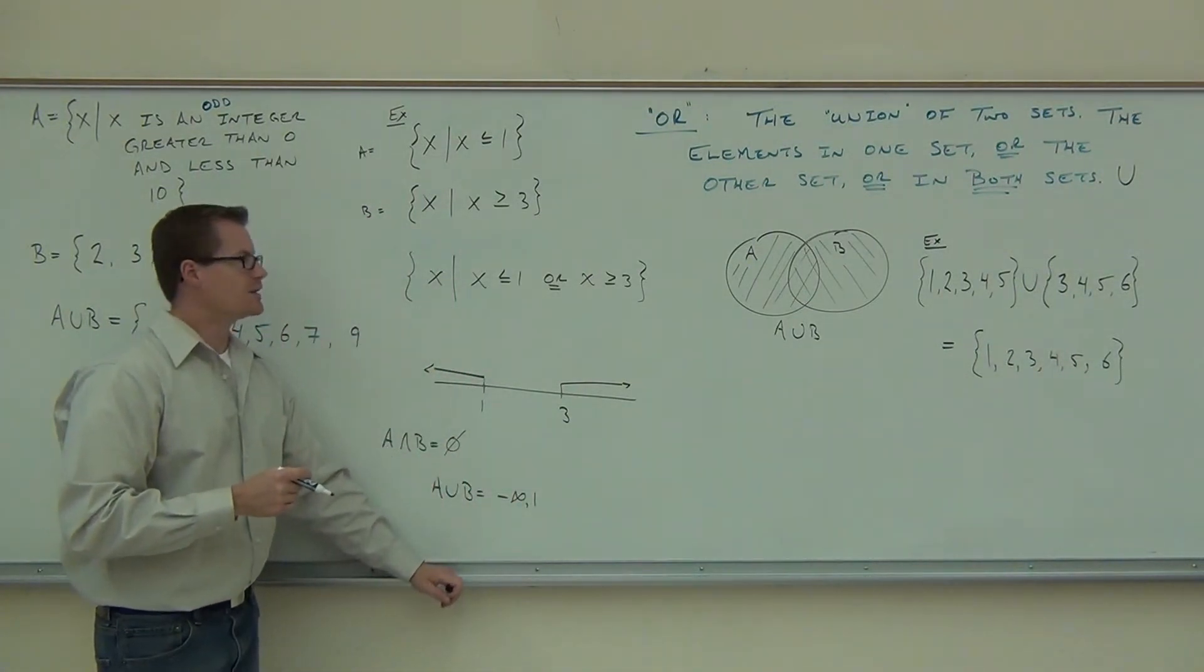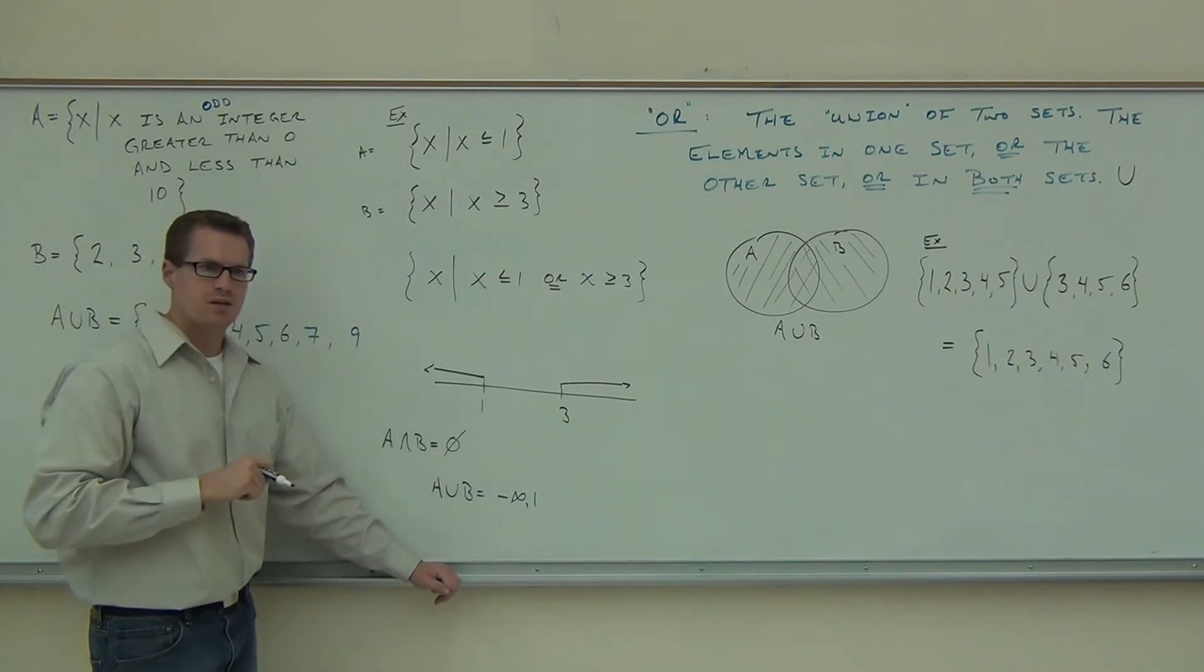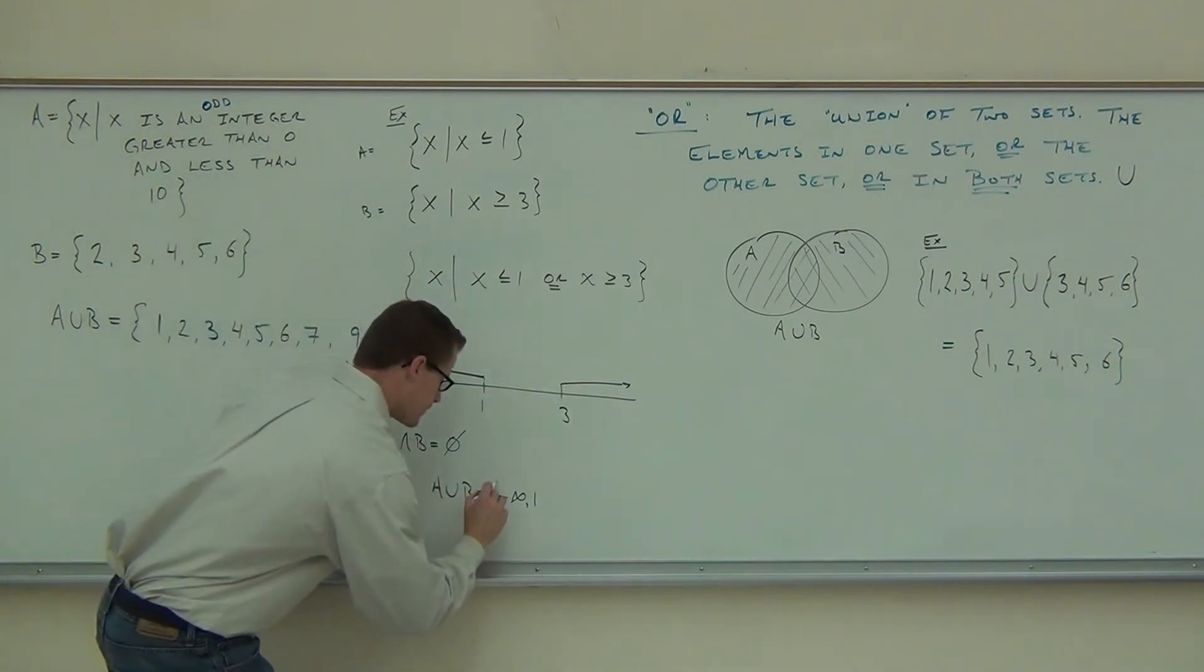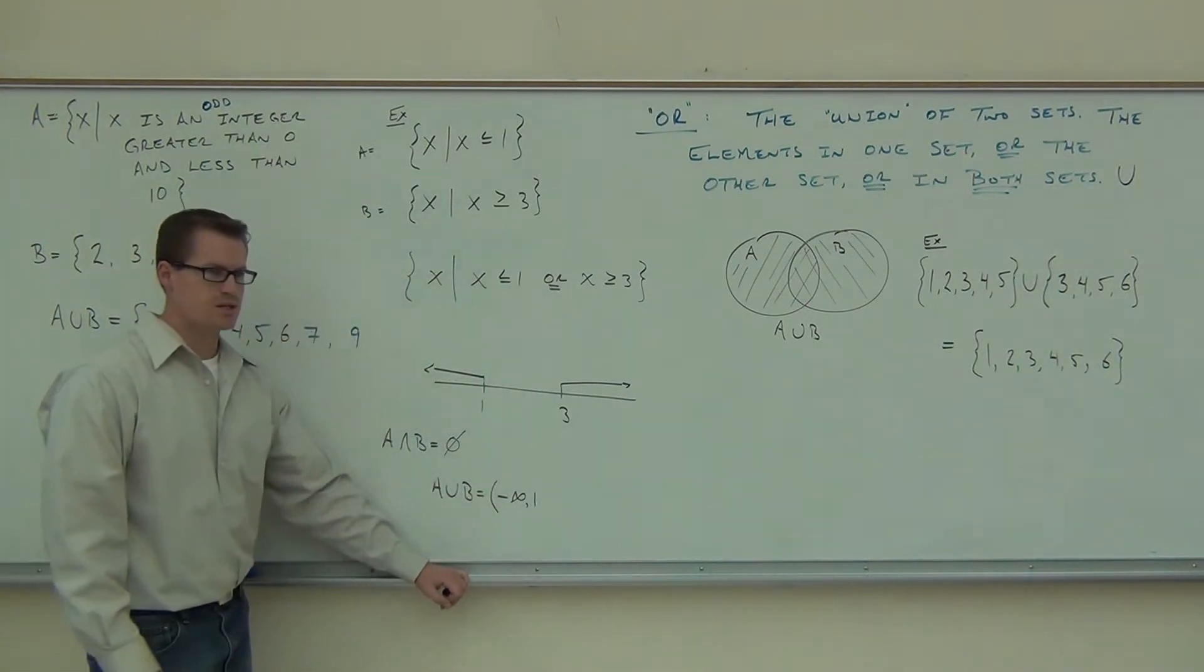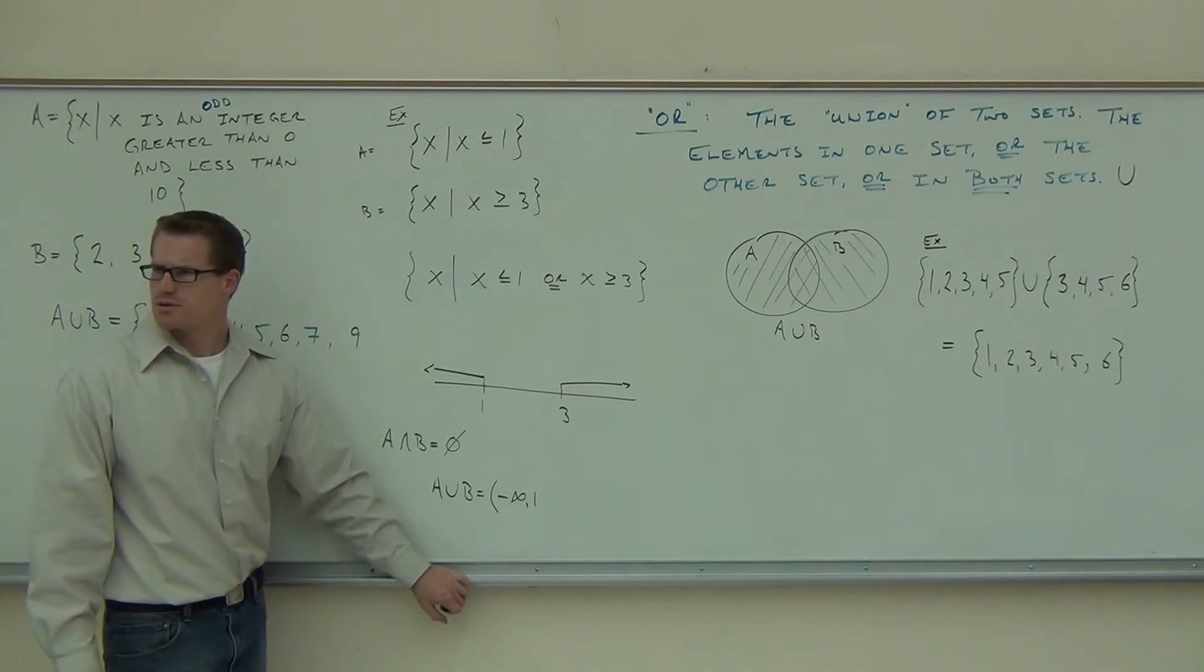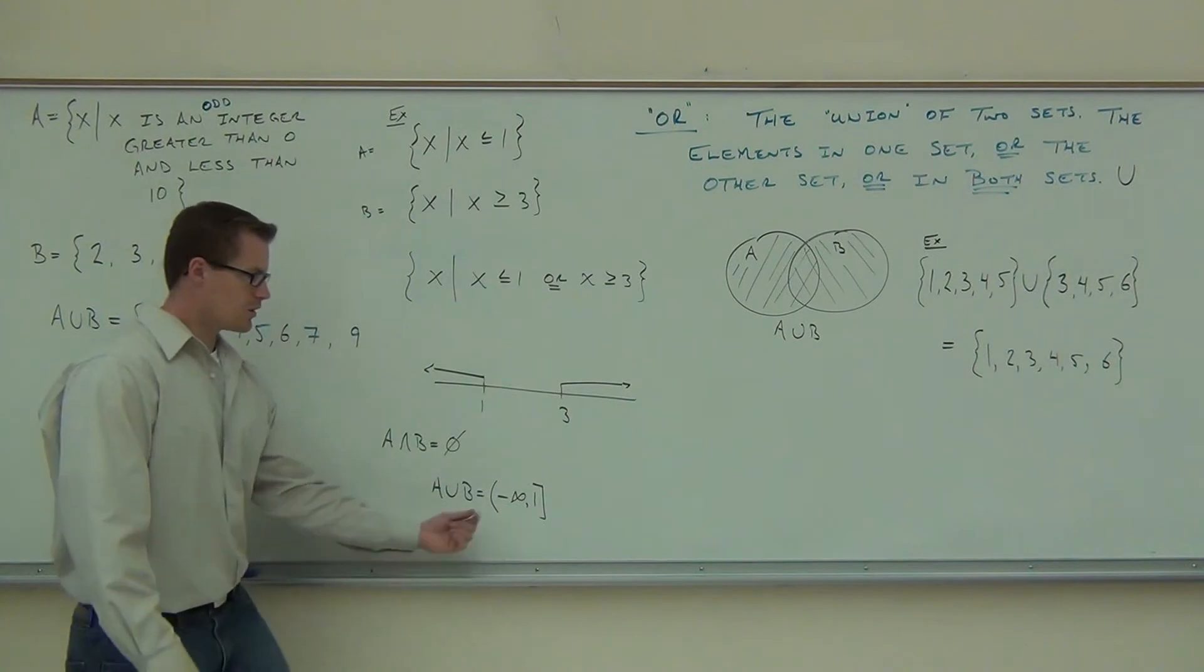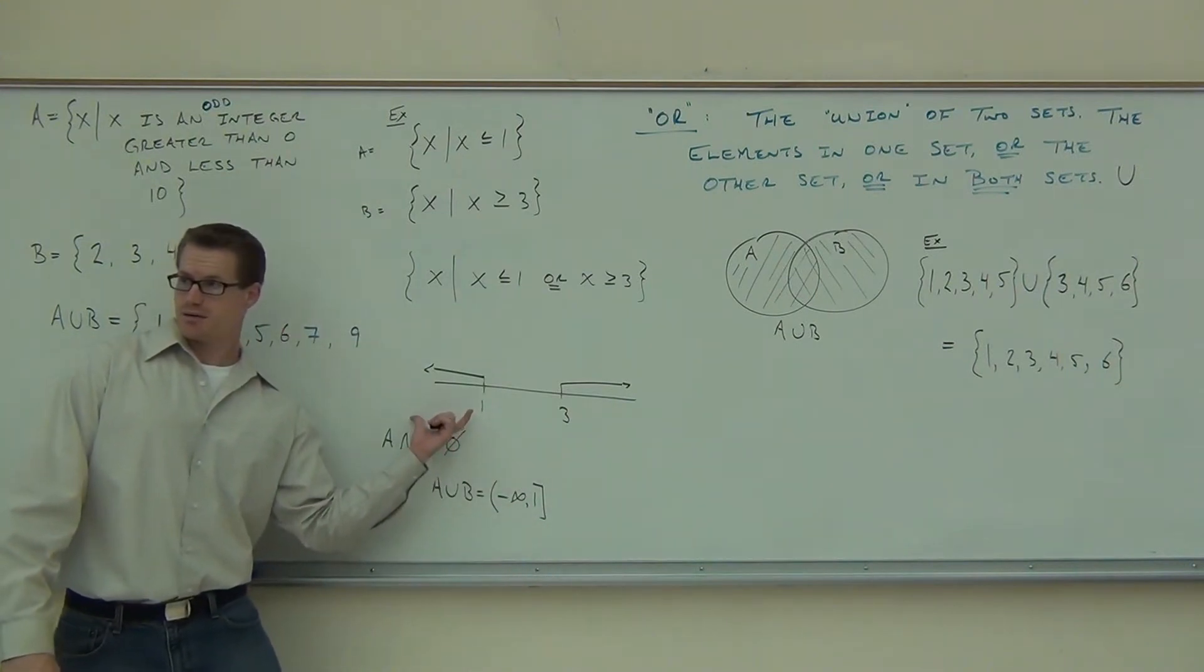First interval. Let's go ahead and use the appropriate symbols here. Do we need parentheses or brackets for this? Parentheses and a bracket. Why a parentheses? Negative infinity. Good. And why a bracket? You all agree that this is this interval, yeah? Got that down.